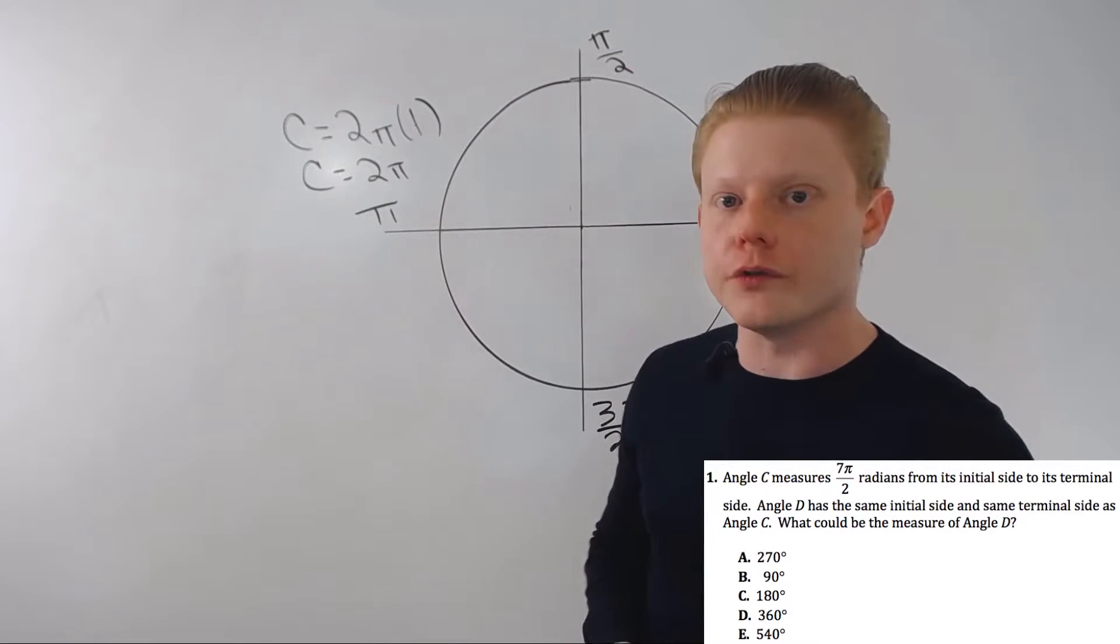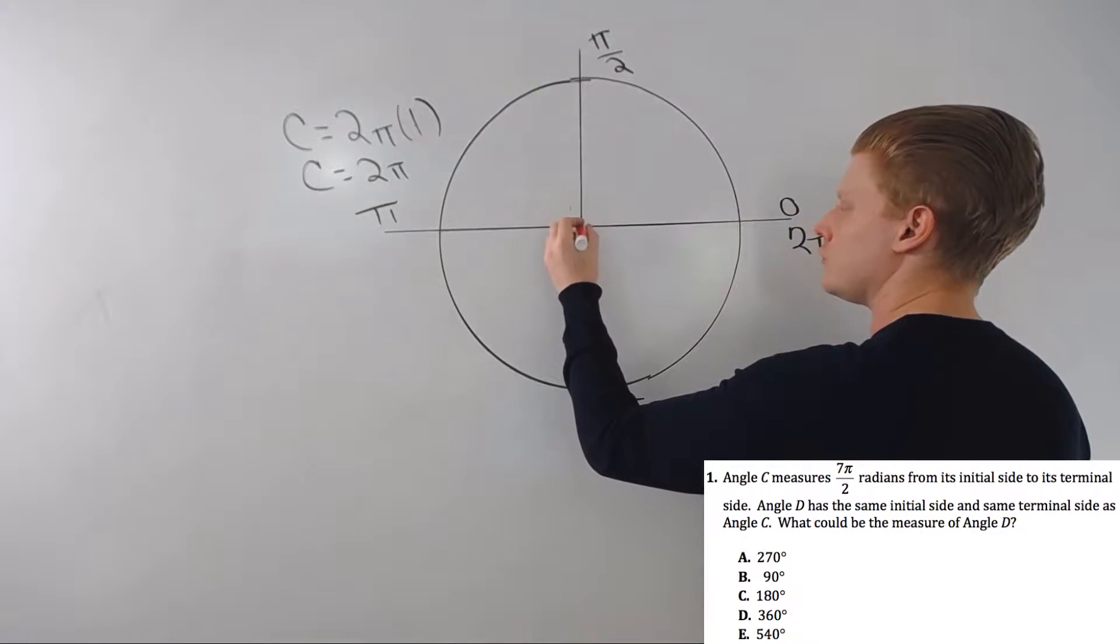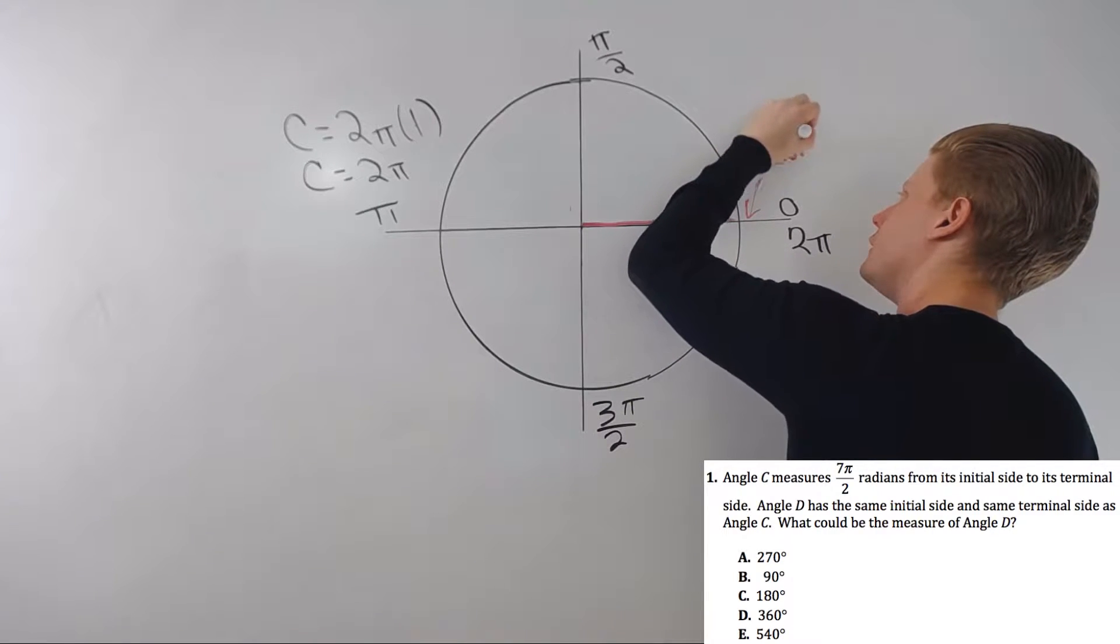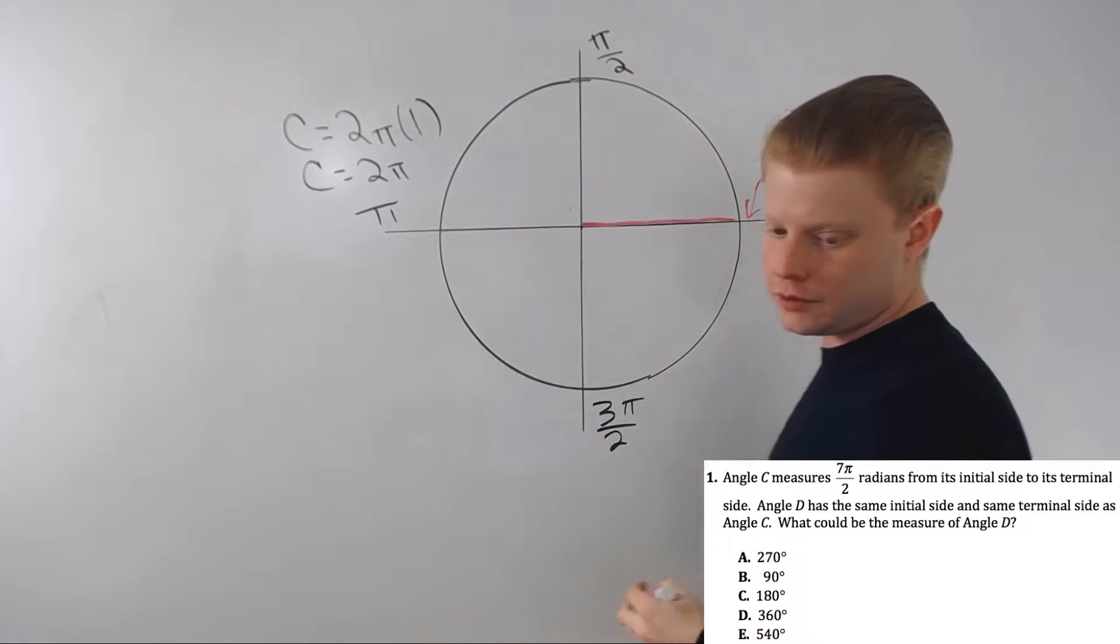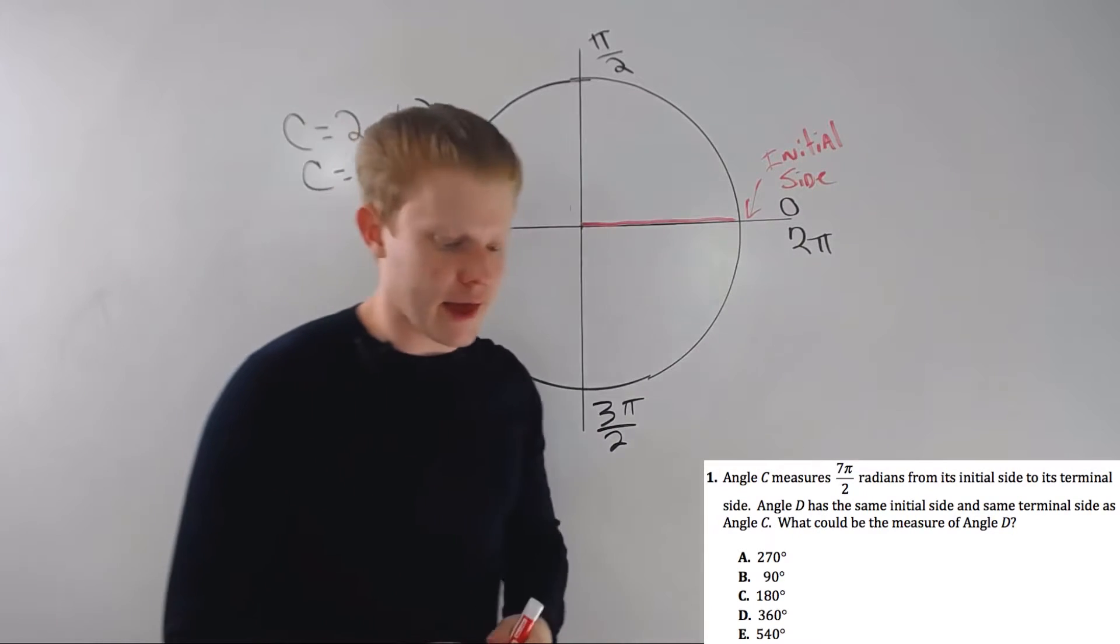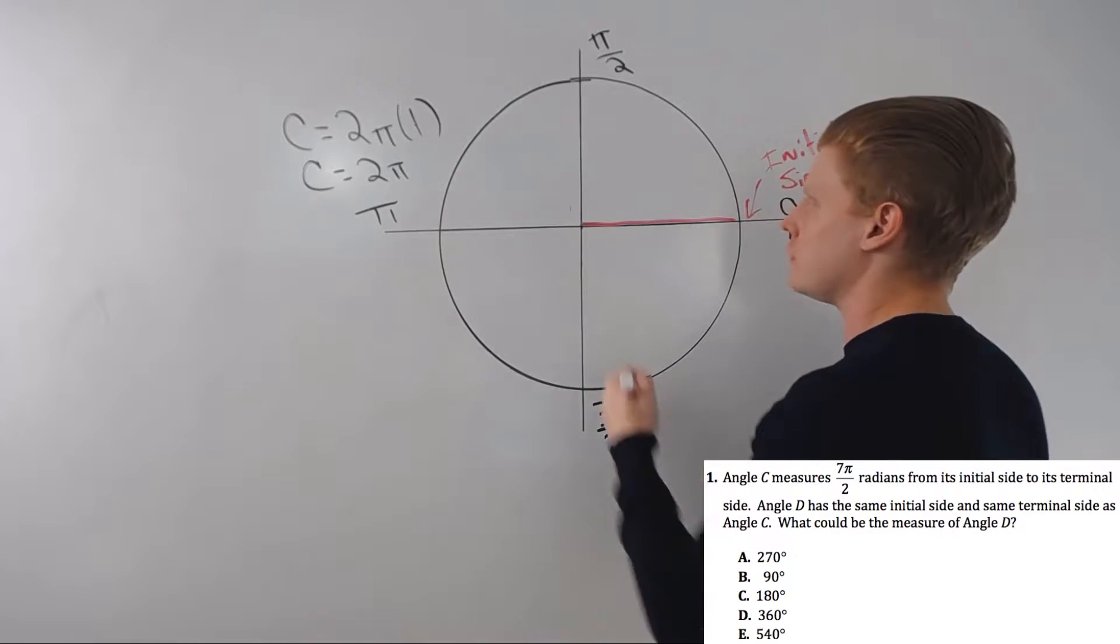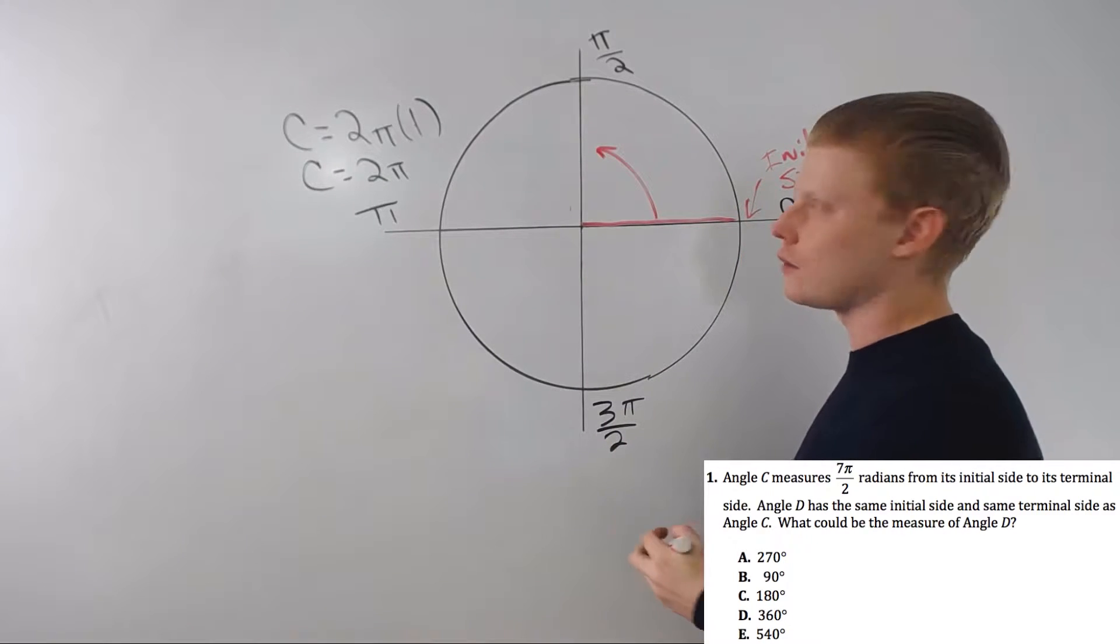Second, on the unit circle, there's a couple things you need to know. All angles start here. This is the initial side. They start at the initial side, and usually, but they can go the other direction, so usually we go this way. Which way is that? Counterclockwise.